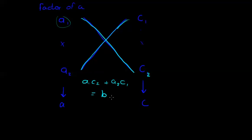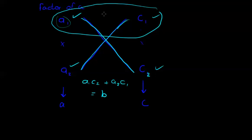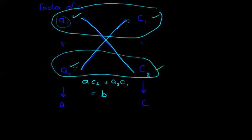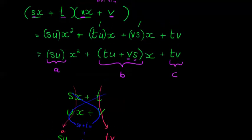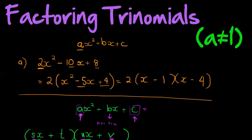Once I find the right factors, those factors form my two brackets — so this will be one bracket and that will be the other bracket. I think this is all a bit abstract; you'll probably understand much better when I do a few examples in the next video. I apologize if you watched this hoping to see examples — in the next video I promise to show you some. See you there.